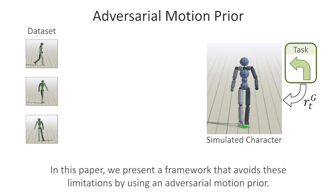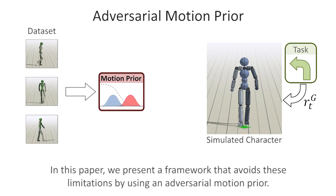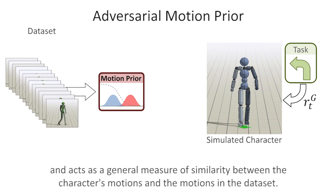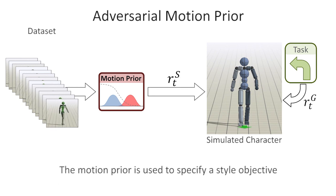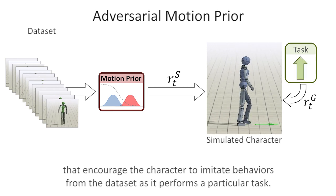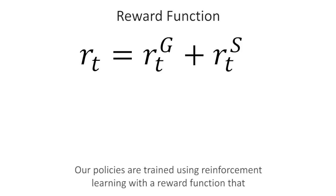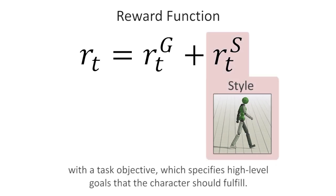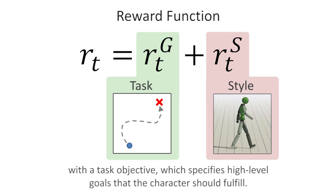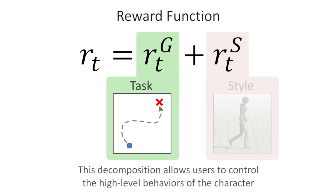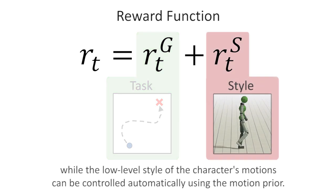In this paper, we present a framework that avoids these limitations by using an adversarial motion prior. The motion prior can be trained with large data sets of unstructured motion clips and acts as a general measure of similarity between the character's motions and the motions in the data set. The motion prior is used to specify a style objective that encourages the character to imitate behaviors from the data set as it performs a particular task. Our policies are trained using reinforcement learning with a reward function that combines the style objective from the motion prior with a task objective, which specifies high-level goals that the character should fulfill. This decomposition allows users to control the high-level behaviors of the character using relatively simple task-reward functions, while the low-level style of the character's motions can be controlled automatically using the motion prior.